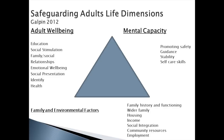Another way of looking at the concept of safeguarding adults is through life dimensions — from general adult wellbeing, taking on board their education, social stimulation, family and social relationships, emotional wellbeing, social presentation, identity, health, and mental capacity. This includes promoting safety, giving guidance, promoting stability, and enhancing self-care skills. Family and environmental factors are also crucial, including family history and functioning, a person's wider family, their housing, income, social integration, resources available in their community, and employment.